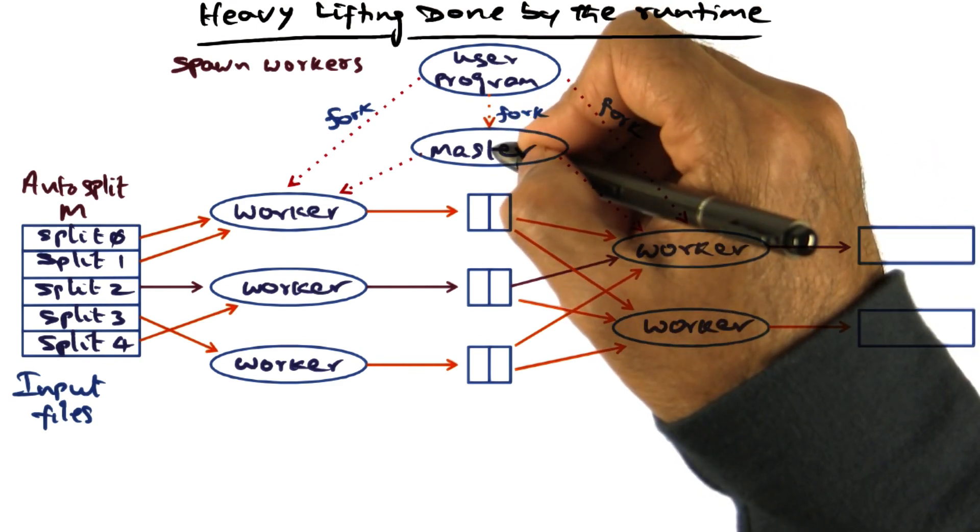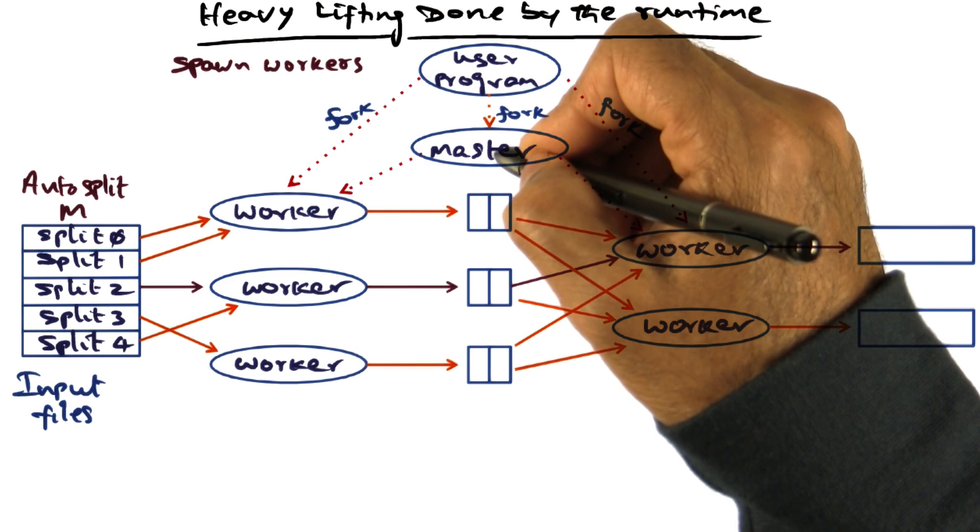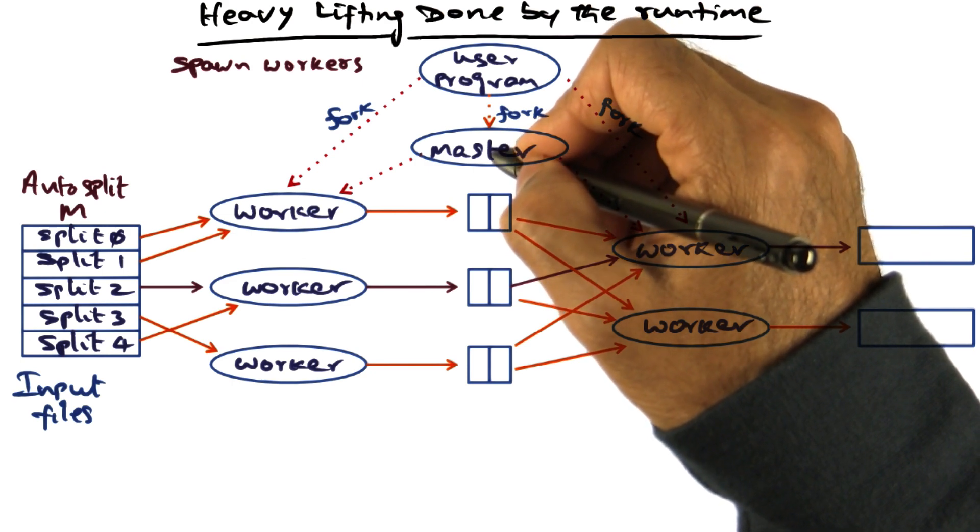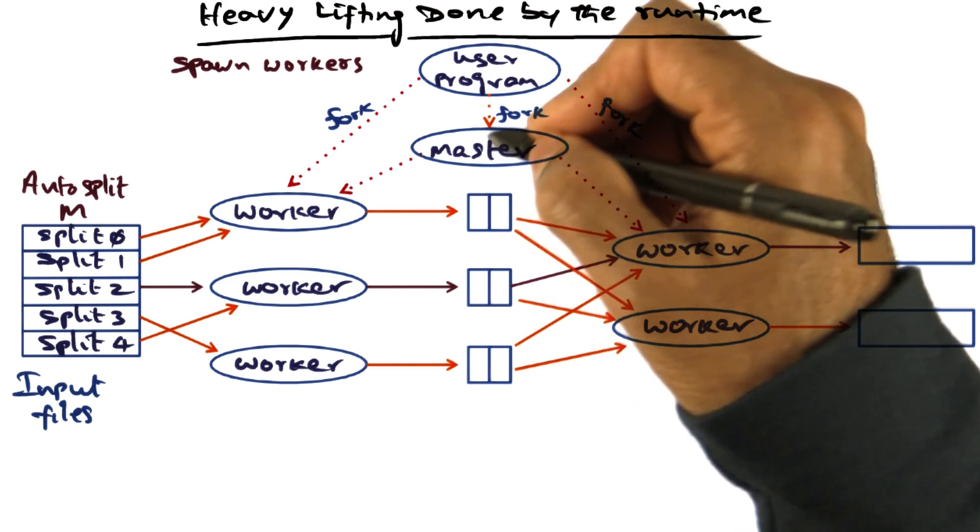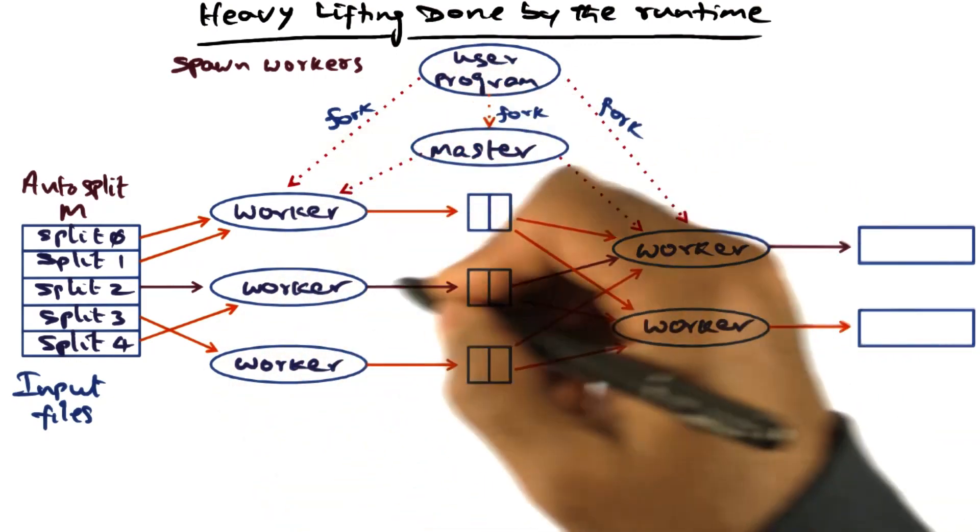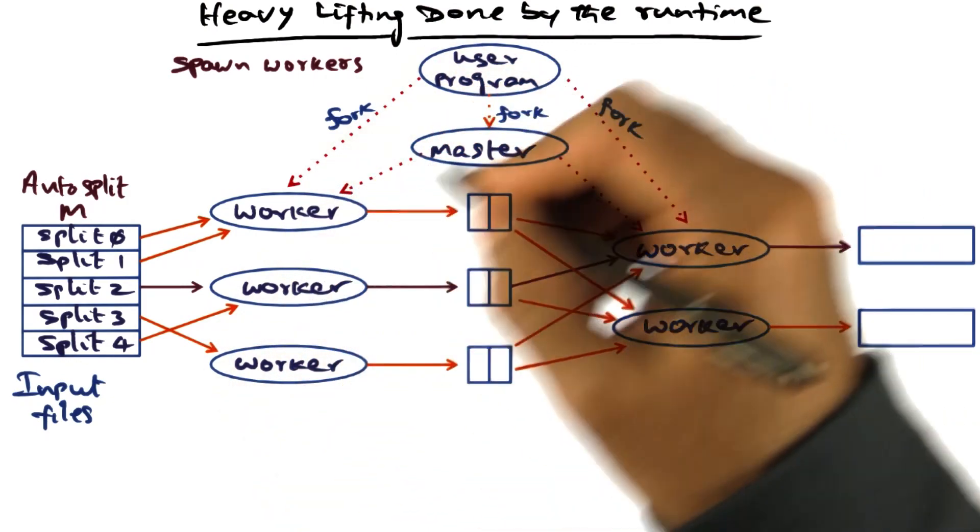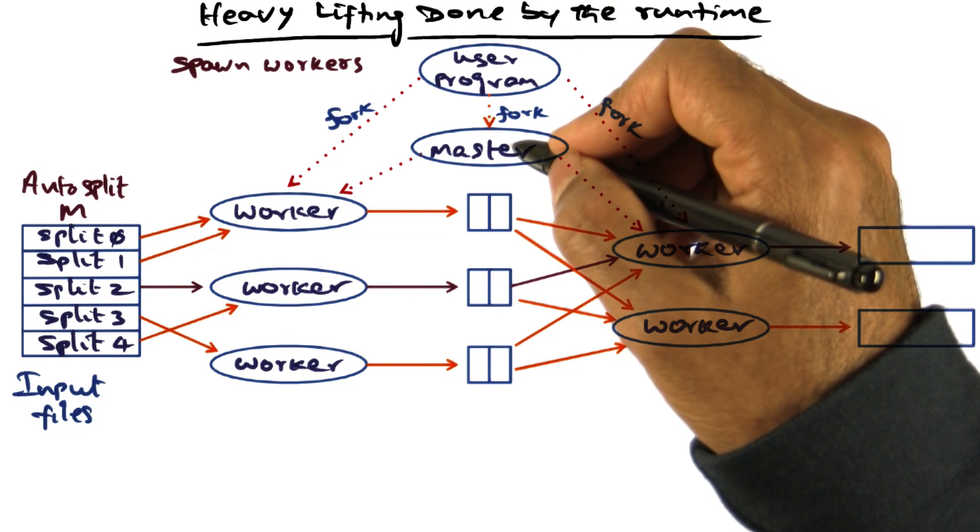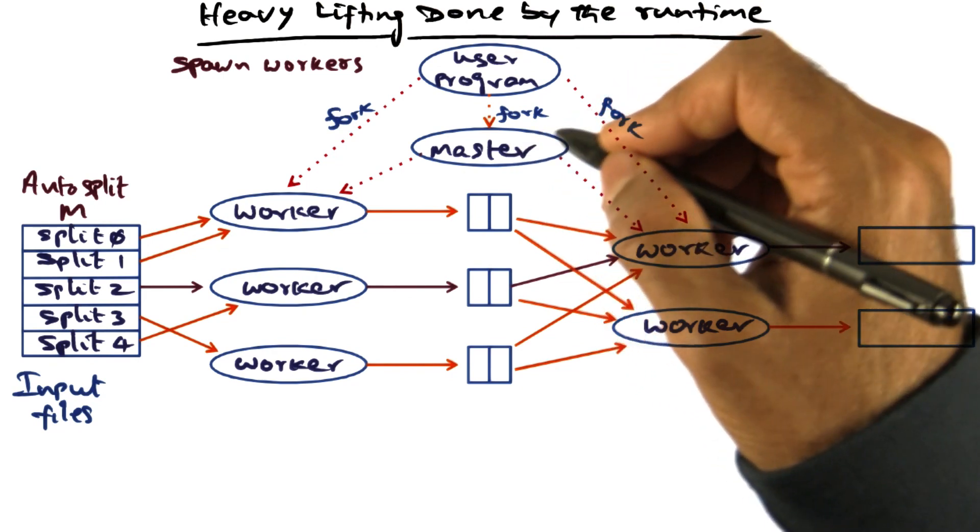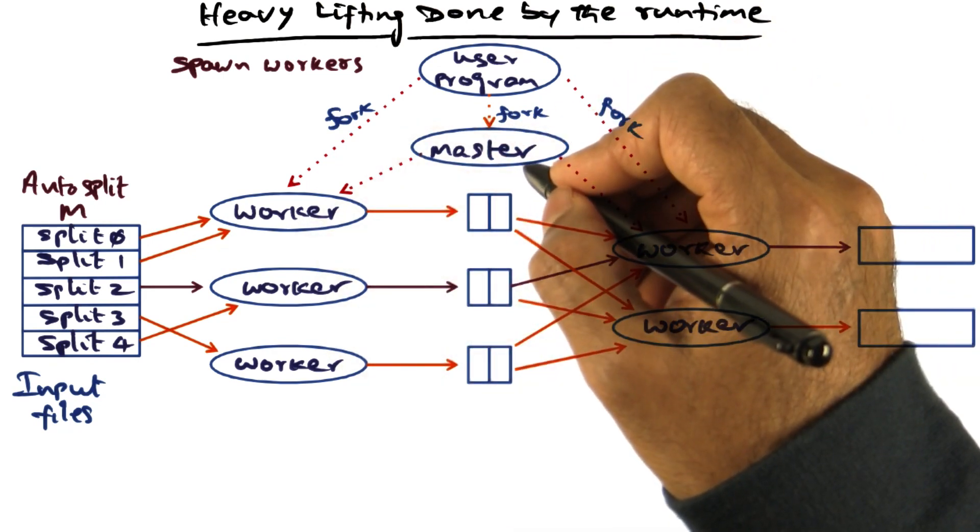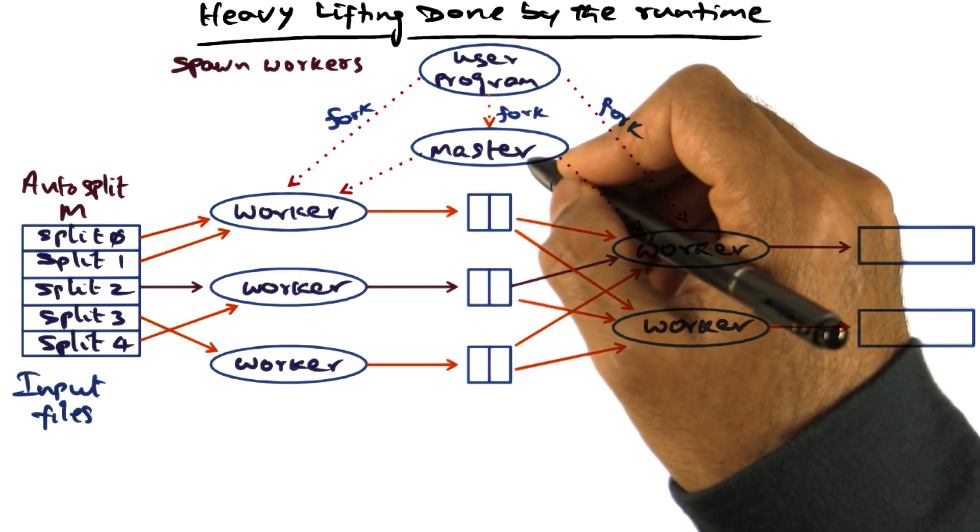The master is special because it's the one that oversees the whole operation and keeps tab on which workers are doing what functions, when they're done, when to start new work, and when to say that the computation is done. All of those chores are being orchestrated by this master.